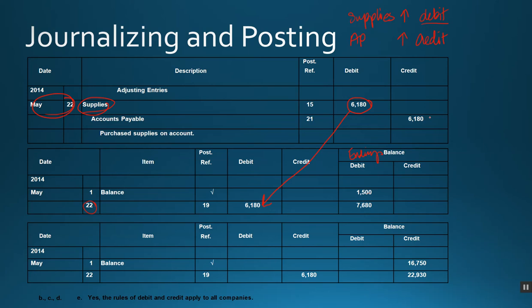Then we go to accounts payable in the ledger and post or store that information there. Notice it's being credited, so we credit that account $6,180. It already had value there, so we're adding to it because this account increases with a credit. The ending balance for accounts payable is now $22,930.